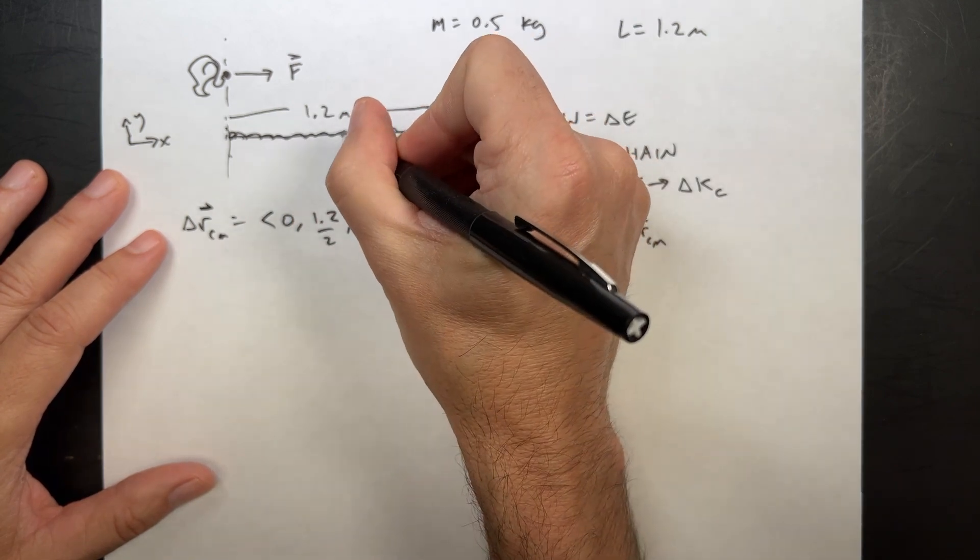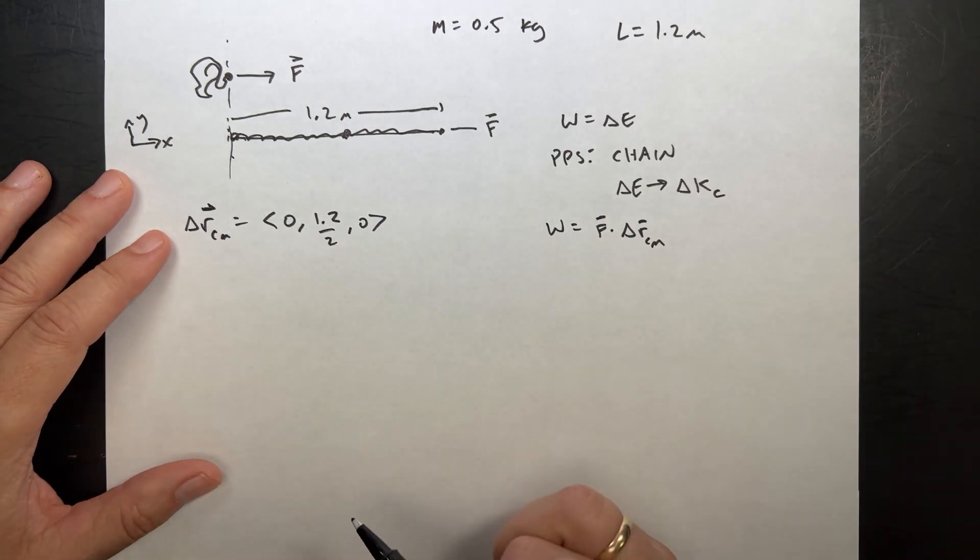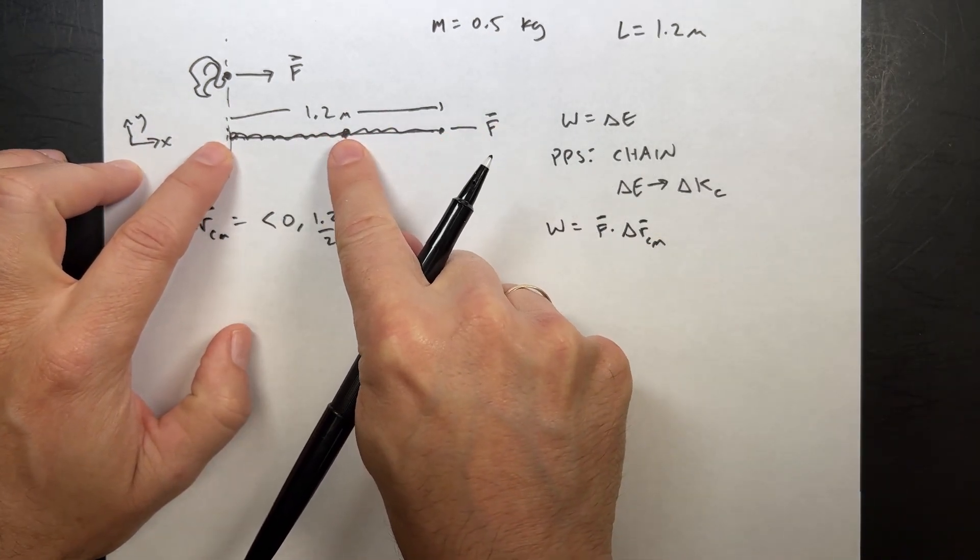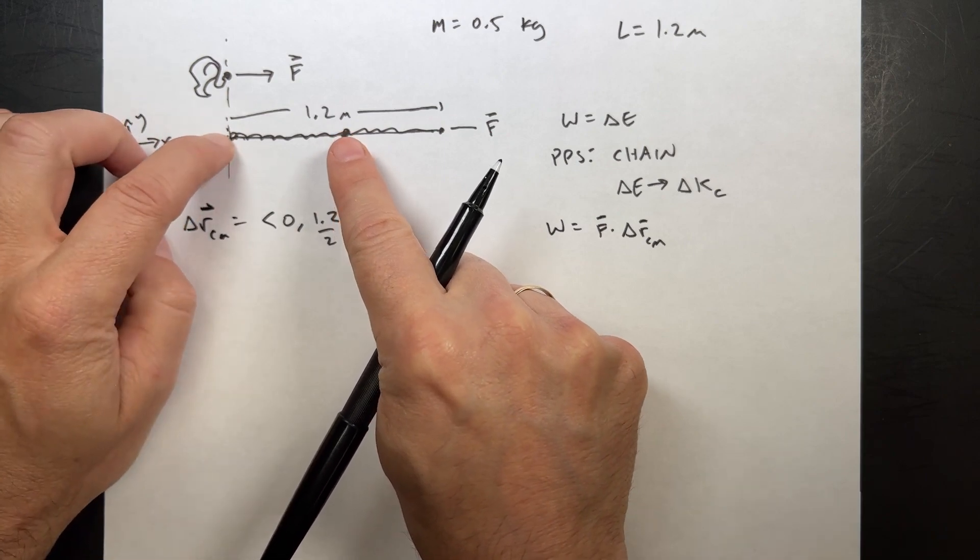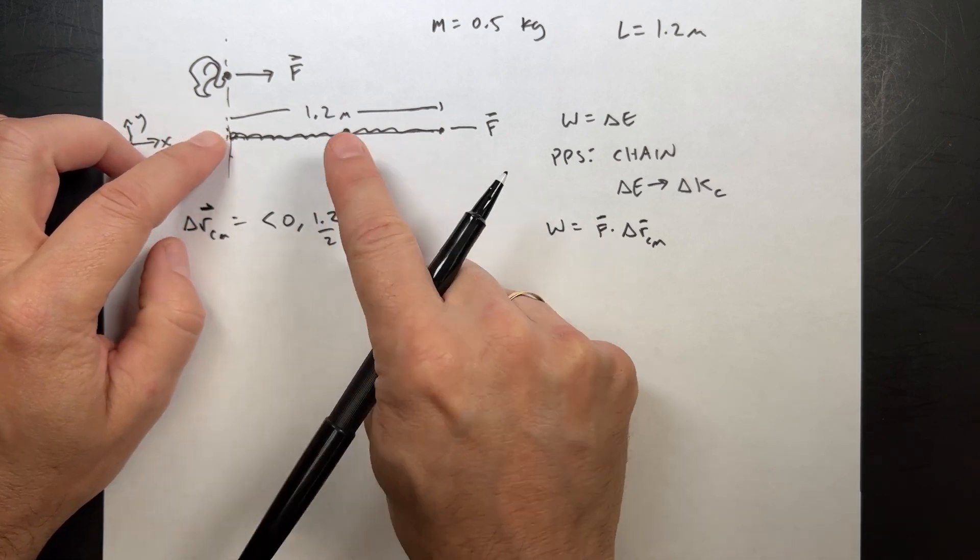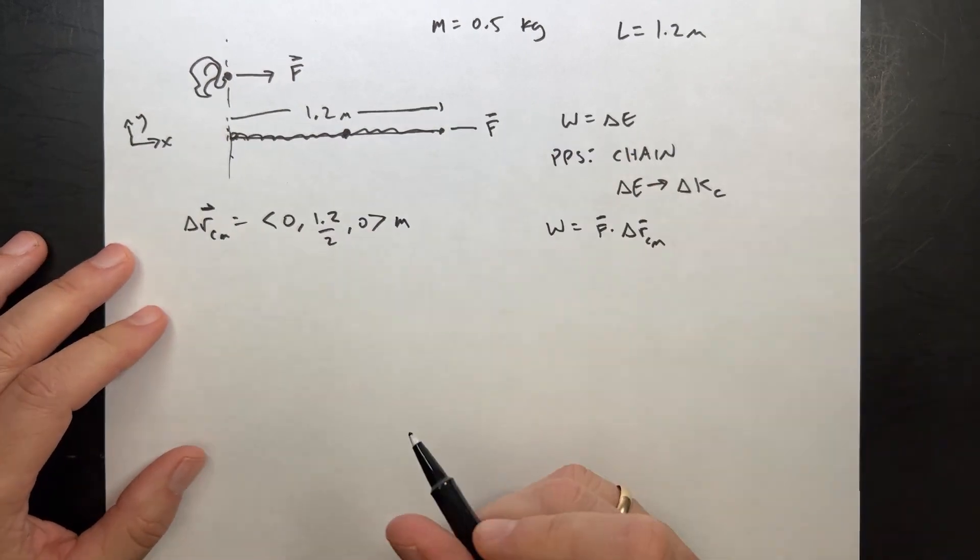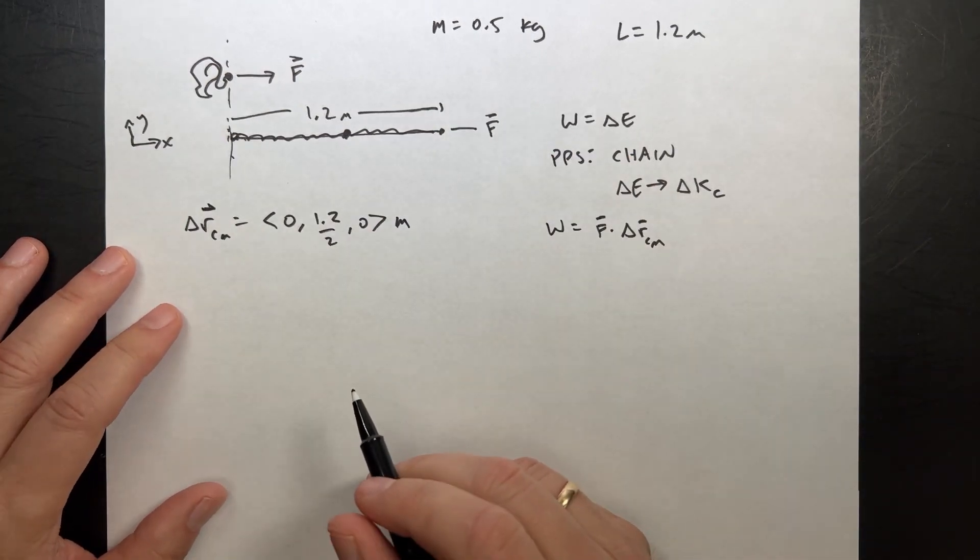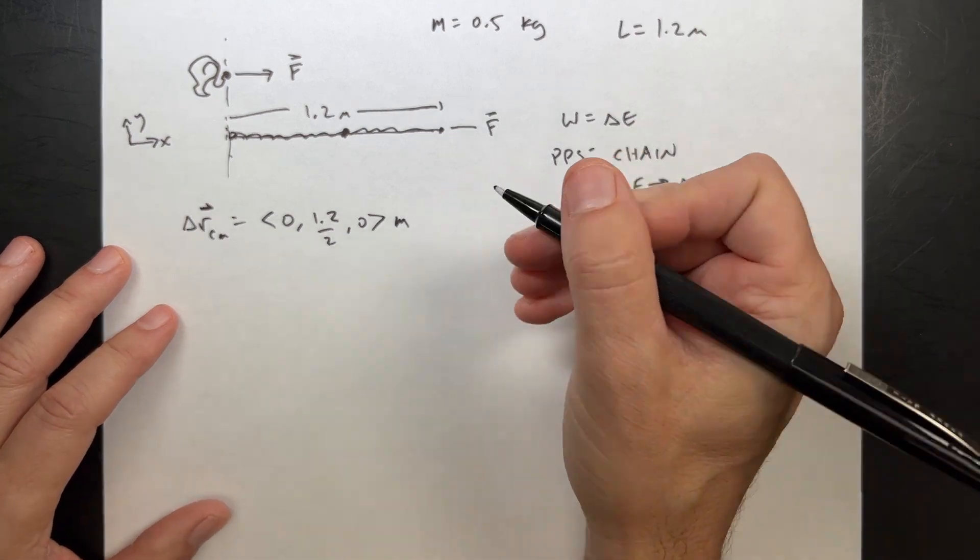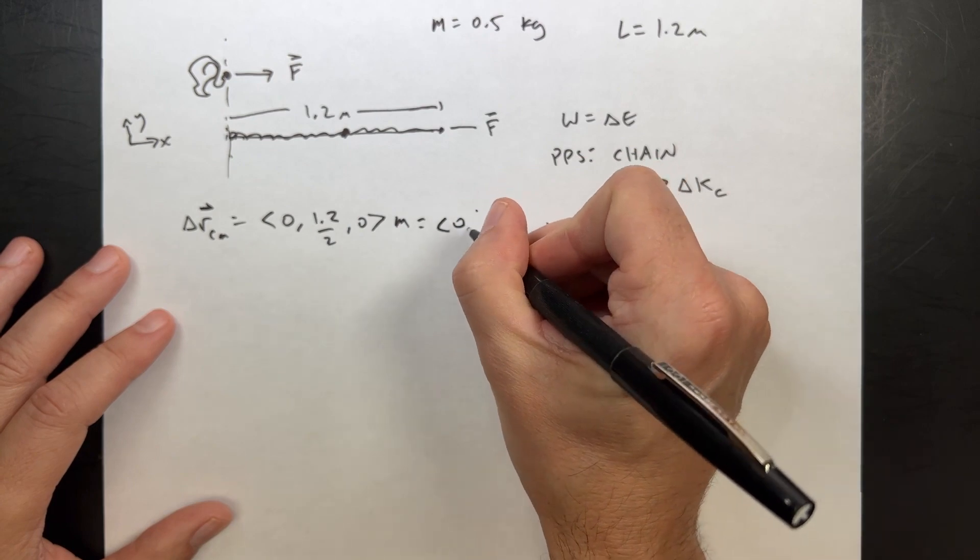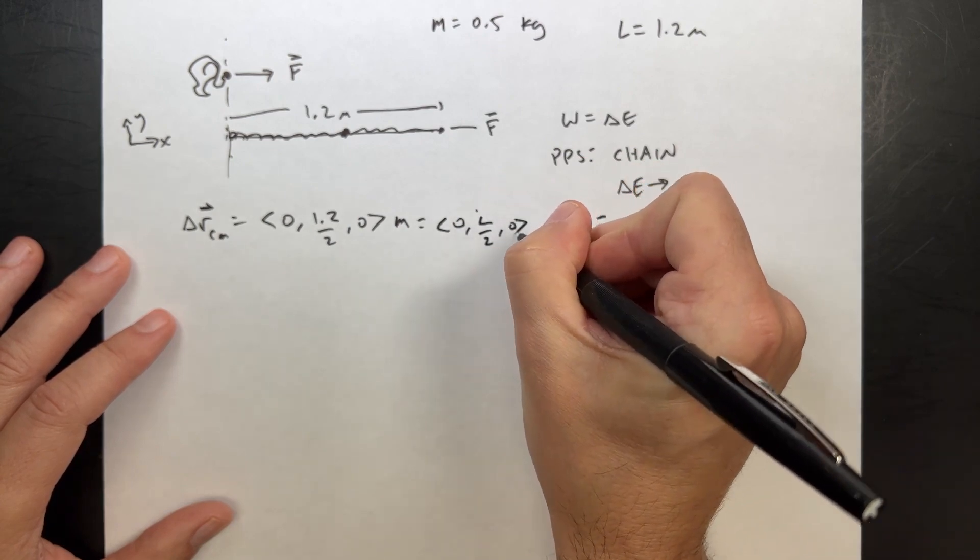So if I call this my origin, then delta r, and this is the x and the y direction, delta r center of mass is going to be equal to the vector 0, 1.2 over 2, 0. Because here's the center of mass right there in the middle. So if I stretch this out, it's going to be half of that. The initial position is 0, 0, 0. The final position's right here. So that's really L over 2. So this is the vector 0, L over 2, 0.